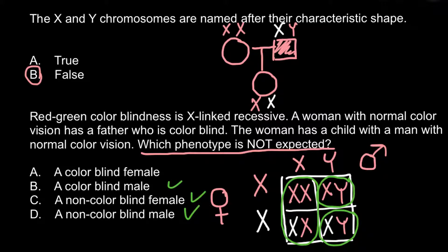Answer A: a colorblind female. In this family, a colorblind female is not a possible variant. Because 50% of the females would be phenotypically and genotypically normal, and 50% of them, those who would have one defective gene on the X chromosome, would balance it with one normal dominant allele on the other chromosome. Phenotypically they would still be normal. So our answer is Answer A — we do not expect a colorblind female in such a family.